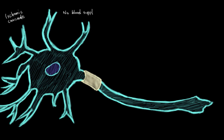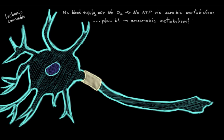So without blood supply, and therefore a lack of oxygen, neurons will lose their ability to create energy in the form of ATP through aerobic metabolism. So the neuron then goes on to plan B for energy production. It switches over to anaerobic metabolism, which is what happens in the absence of oxygen.